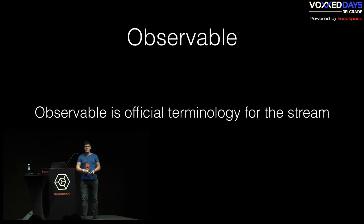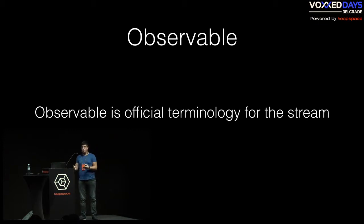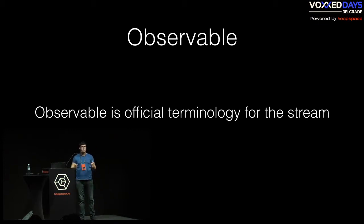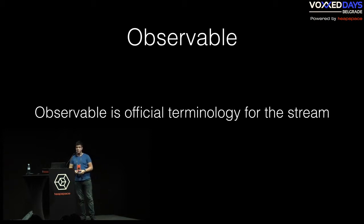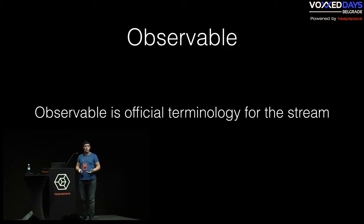It's observable. If you've read about reactive programming, you've seen the word 'observable.' That's just official terminology for a stream — when they say observable, they simply mean the stream. Observables have many helper functions like filter, map, and so on, that will help you work with those streams.